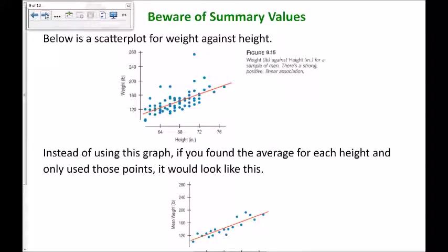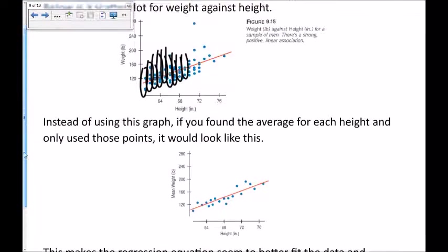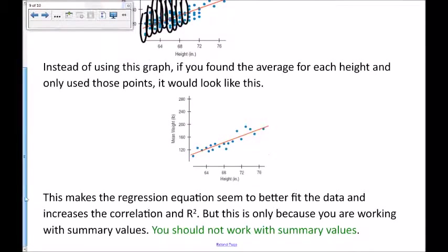The last topic to discuss is working with summary values. Below is a scatter plot for weight versus height for a group of students. Instead of using this graph, if you found the average for each height and only used those points, it would look like this. This makes the regression equation seem to better fit the data and increases the correlation and R squared. But this is only because you are working with summary values and it throws away some of your data and makes it seem like you have a stronger relationship than you really do. So you should not work with summary values. It's very deceptive.